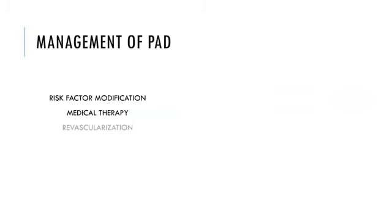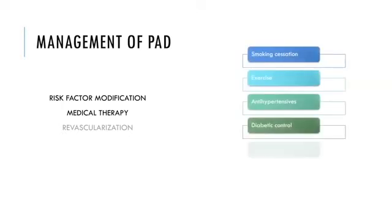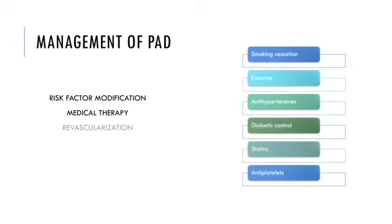Risk factor modification and medical therapy are important for all patients with PAD. This includes smoking cessation, regular exercise, blood pressure and diabetes control, statin therapy, and antiplatelet agents such as aspirin or clopidogrel. Revascularization is indicated for patients with severe lifestyle-limiting claudication and critical limb ischemia.